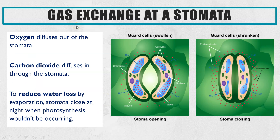Gas exchange occurs at the stomata — oxygen diffuses out and carbon dioxide diffuses in. Carbon dioxide is required for photosynthesis and is constantly being used by cells within the leaf, particularly in the palisade mesophyll, maintaining a lower concentration in the spongy mesophyll compared to the atmosphere. That's why carbon dioxide diffuses in. Oxygen is also useful for respiration within the plant; however, because oxygen is also a product of photosynthesis, there will be high concentrations of oxygen in the spongy mesophyll compared to the atmosphere, and that's why oxygen diffuses out of the stomata.